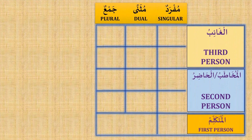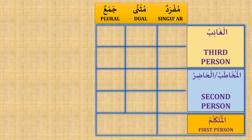There are two ways to categorize the pronouns. The first one is as persons: al-ghaib, third person; al-mukhatab or al-hadir, second person; and al-mutakallim, first person. The other way to categorize the pronouns is as numbers: mufrad, singular; muthanna, dual; and jam'a, plural.